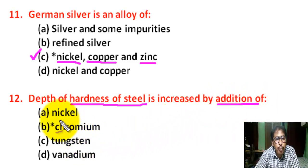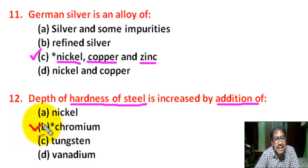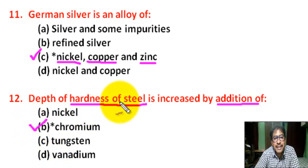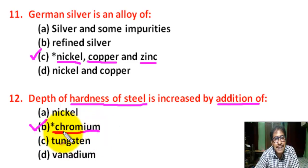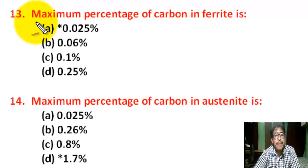Question number twelve: depth of hardness of steel is increased by addition of — correct answer is B — hardness of steel is increased by addition of chromium.